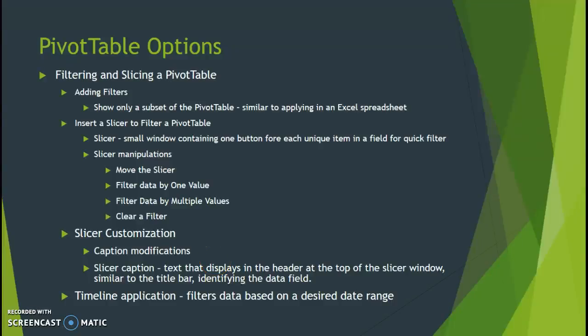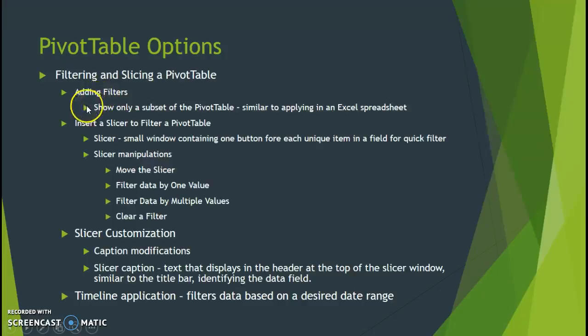Welcome back to video three in this four-part series covering chapter five, subtotals and pivot tables. In this particular video we're going to look at some of the options available via pivot tables, including filtering and slicing of the data, and adding filters to review a subset of data in the pivot table applicable to those filters.